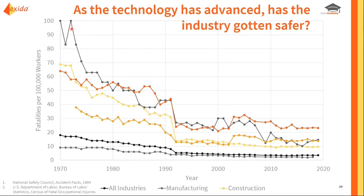The top line — medium gray — is mining, which started out being very risky, and over time we've seen significant drops. We've seen improvements in construction as well. Orange is transportation, and our all-industries average in black is our key metric summing all of these together. What we see is that from the 1970s until the mid-1990s, we had pretty significant reduction in a lot of the higher risk industries, so overall we saw good reduction. But from the 2000s to now, there's a slight downward trend, but it's actually much flatter than we might expect.